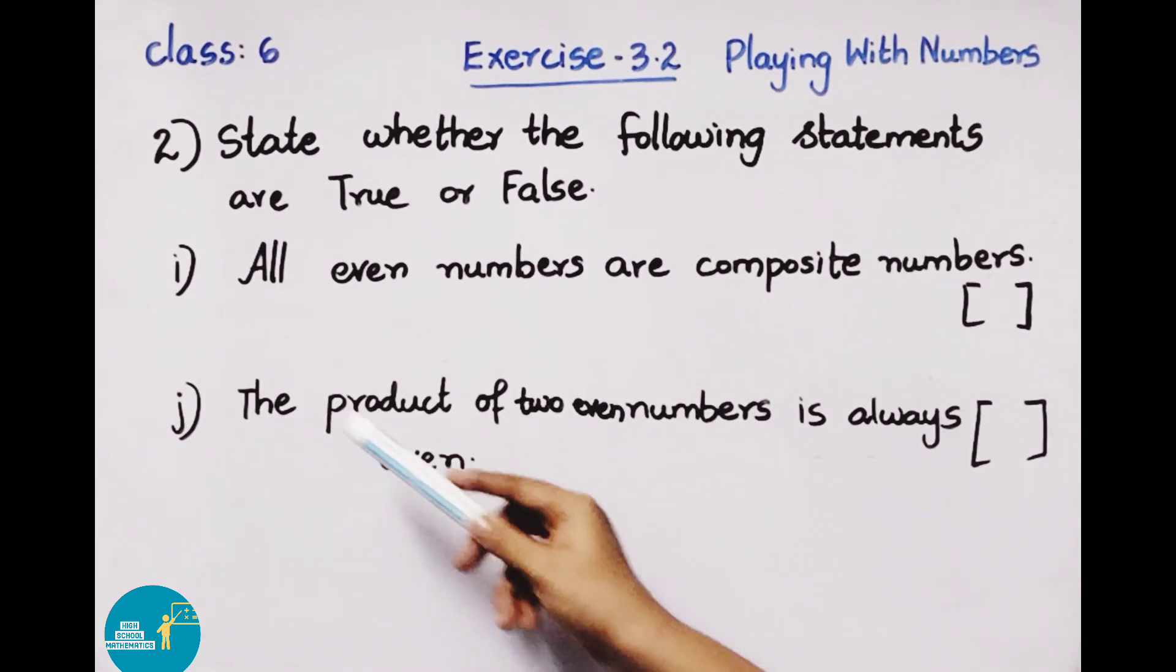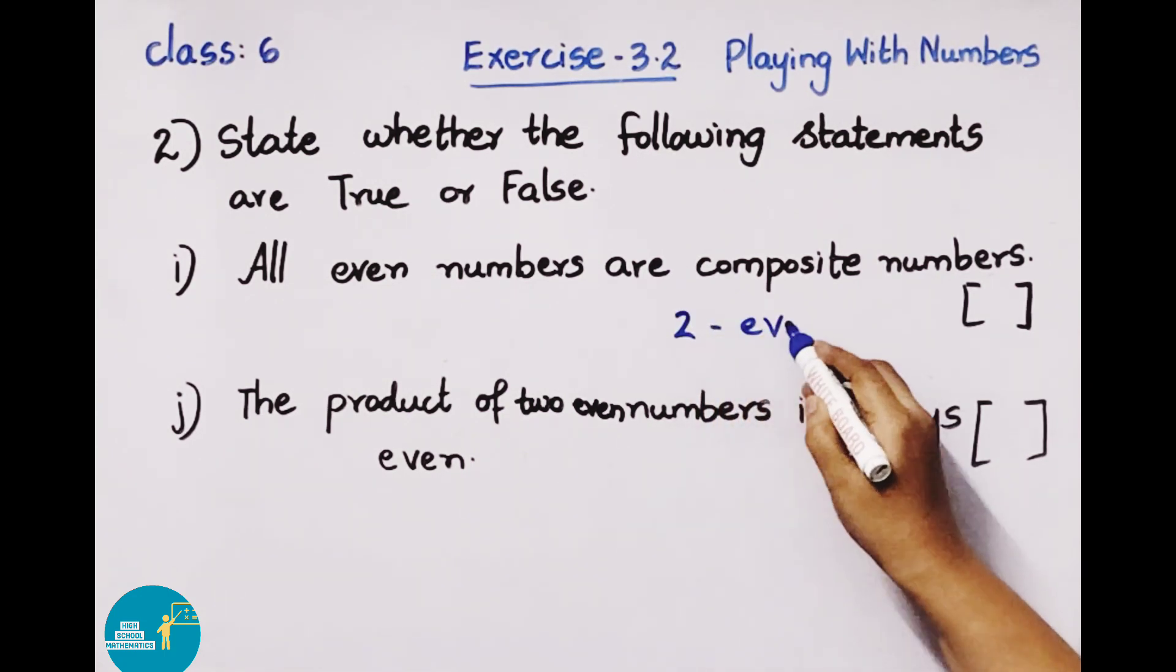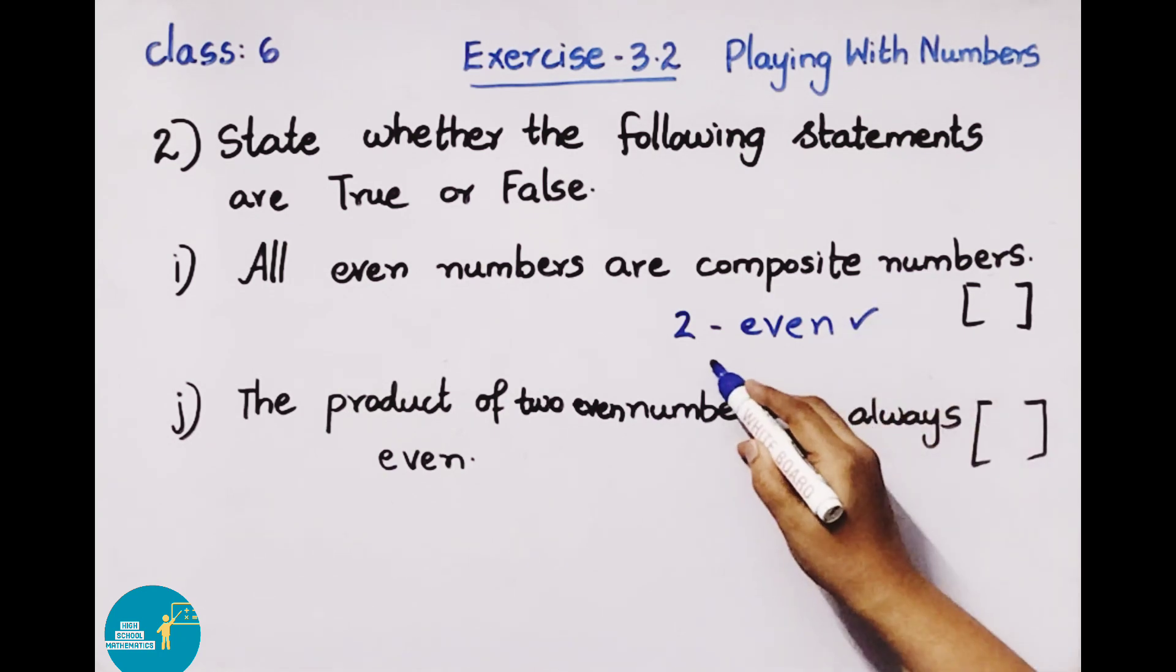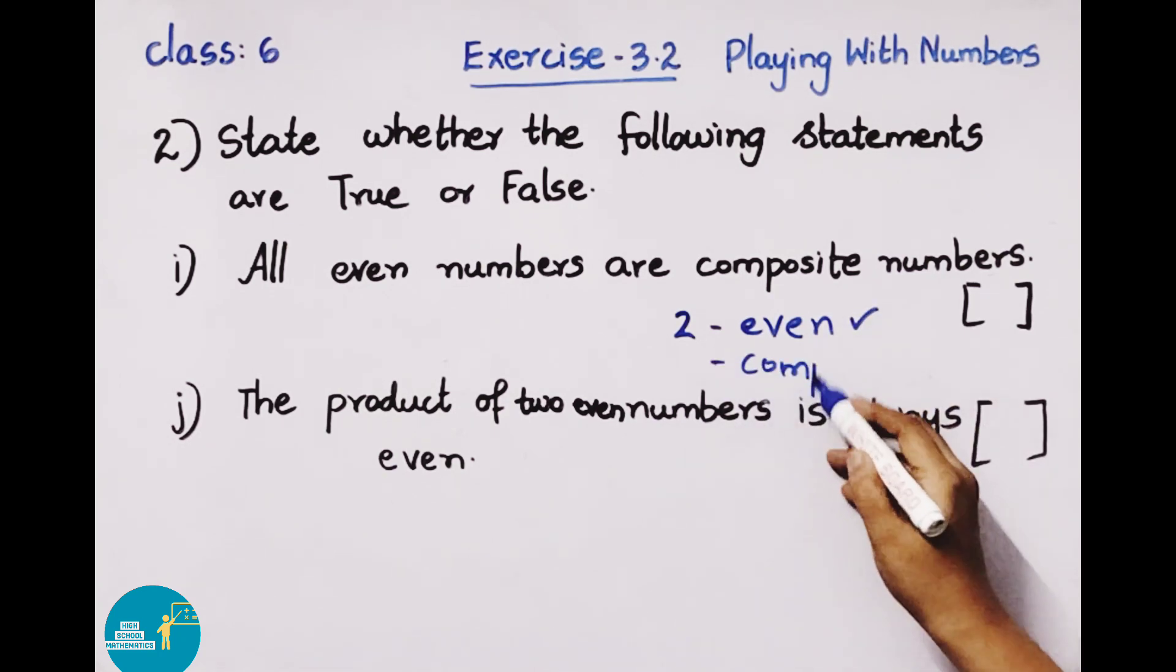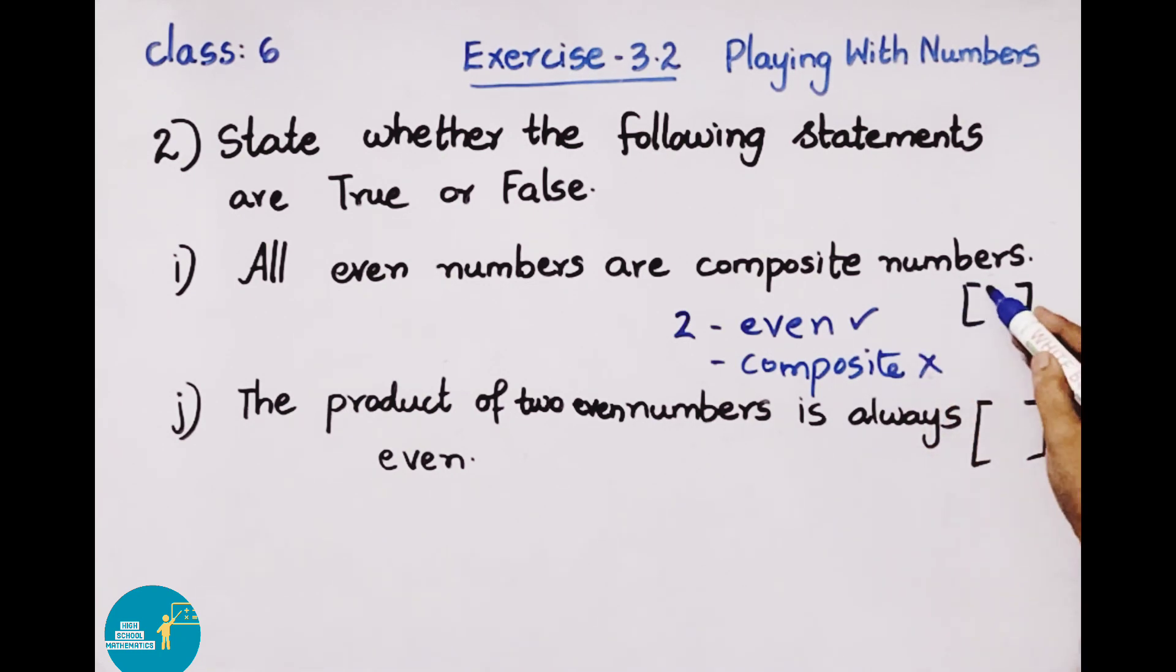Statement i: All even numbers are composite numbers. Example: 2 is an even number, but it is not a composite number, 2 is a prime number. So the statement is false. Statement j: The product of 2 even numbers is always even. Two even numbers 2 and 4, their product is 2 times 4 equals 8, which is an even number. So the given statement is true.